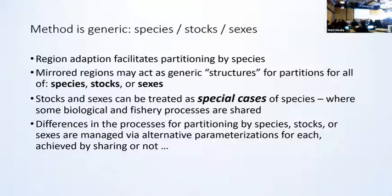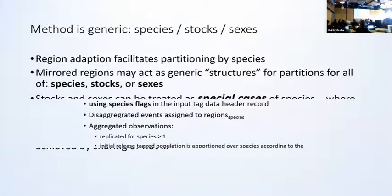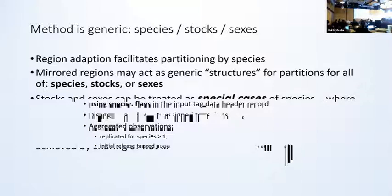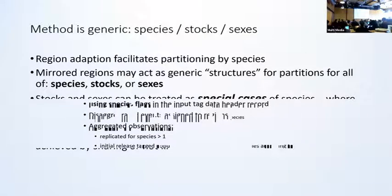To extend this to multiple stocks and sexes, the region adaptation was really generic, such that the mirrored regions were provided with appropriate data structures to model the partitions for any of the three — species, stocks, or sexes. Stocks and sexes can be regarded as a special case of species, but with some of the biological and fishery processes being shared to a lesser or greater degree. To implement the different processes, this is managed by alternative parameterizations with certain parameters being either shared among the stocks or sexes or not.